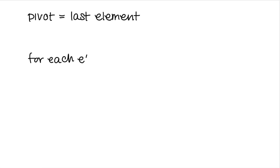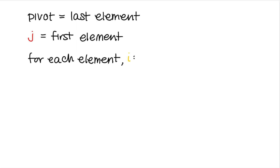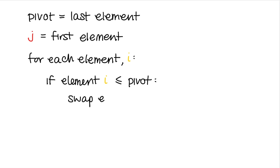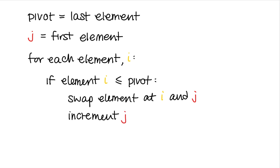Since the first pointer increments every iteration, we can use a for loop: for each element i. For the second pointer, we use it to keep track of elements that are larger than the pivot. We set up another pointer j and set it to low. Inside the loop, we compare if element i is less than or equal to the pivot. If it is, we swap elements at i and j — j points to the element larger than pivot, while i points to the smaller one. After swapping, we increment j by one.